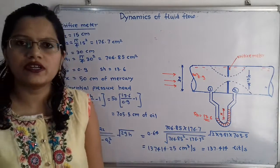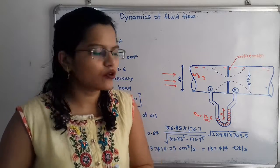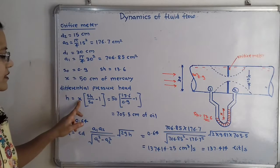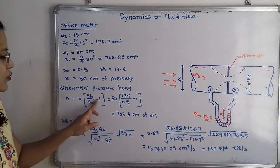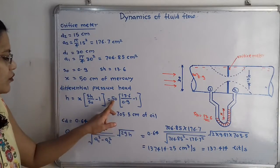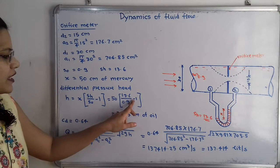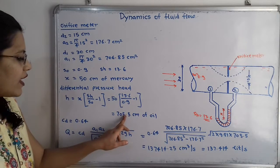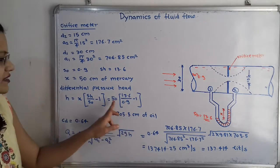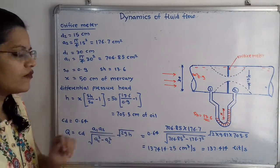With S_o equal to 0.9 and S_h equal to 13.6, the formula to calculate h is: h equals x times the bracket S_h by S_o minus 1. Substituting values: 50 multiplied by 13.6 by 0.9 minus 1, which is equal to 705.5 centimeter of oil. Since x is in centimeters, h has the unit centimeter of oil.